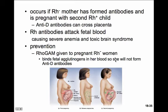An RH negative woman with an RH positive fetus, or who received a transfusion of RH positive blood, will form anti-D agglutinins that attack and agglutinate that blood. There are no problems with the first transfusion or first pregnancy because it takes time for the immune system to respond — those antibodies are not normally present until the first exposure. If an RH negative mother has formed antibodies in the first pregnancy and a second child comes along, these antibodies can cross the placenta. During birth, mixing of fetal and maternal blood causes the RH antibodies to attack the fetal blood, causing severe anemia and toxic brain syndrome. We can prevent this by giving RhoGAM, which binds the fetal aglutinogens in her blood so she won't form anti-D antibodies and the fetus is protected.